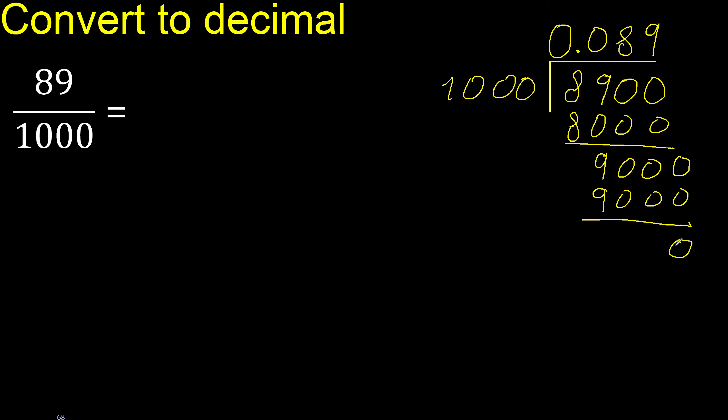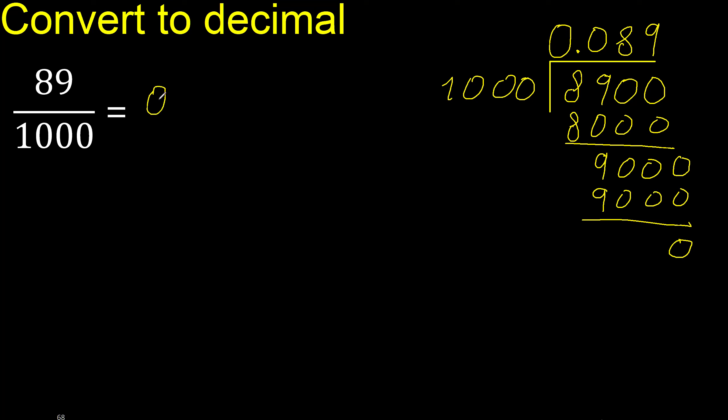Subtract — zero and zero. Therefore finish. The division is complete.